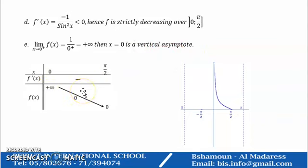The table of variations of f(x) = cotangent of x over (0, π/2) is given by this table, and its representative curve is shown here.